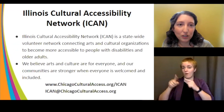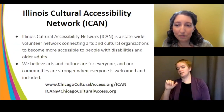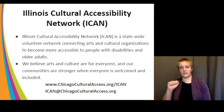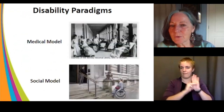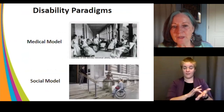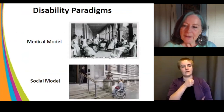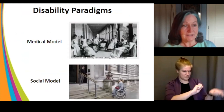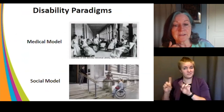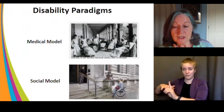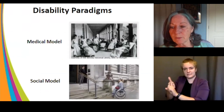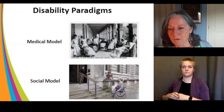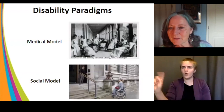Now Susan will talk about disability paradigms. We're going to look at two major models. The medical model holds that people with disabilities are something to be fixed — the focus is on the individual and how they can be changed. The social model, on the other hand, looks at the environment in which people exist and at society as a whole, examining how we can change the environment by removing barriers and obstacles.